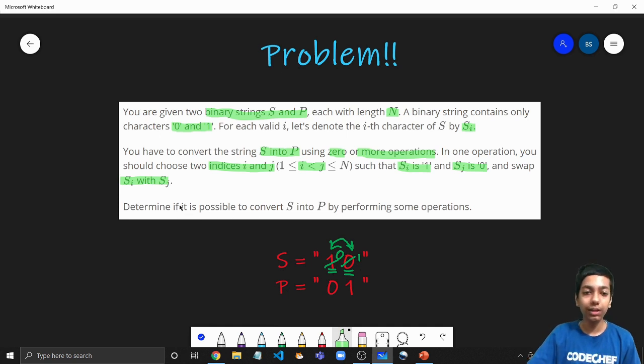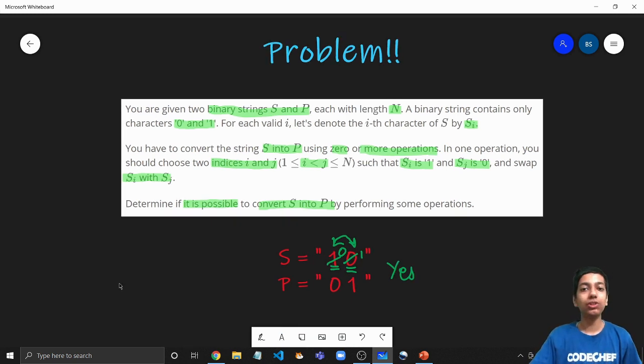So like one operation could be to take this one here. Like if this is s and this is p, so I can take this one and I can take this 0 and I can swap both of them. So now this 1 becomes 0 and this 0 becomes 1. And now you can note that now we have converted s to p by performing this operation. Here it is only one time. Now we need to determine if it is possible to convert s into p by performing this operation. And again 0 or more number of times as well. Here it took us only one time. So in case of these two strings, the answer for these types of strings would be yes, because we can convert s to p by performing this operation. So this is the problem statement.